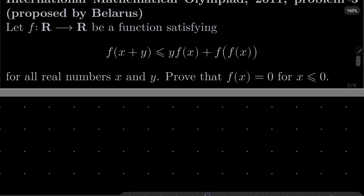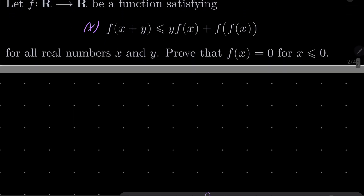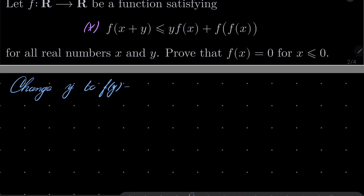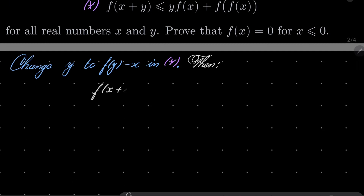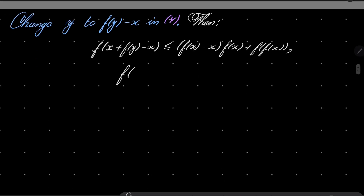Let's call our functional inequality asterisk. Let's change y to f of y minus x in our functional inequality asterisk. Then on the left hand side we have f of x plus f of y minus x, less than or equal to f of y minus x times f of x plus f of f of x. After some simplifications we get f of f of y.